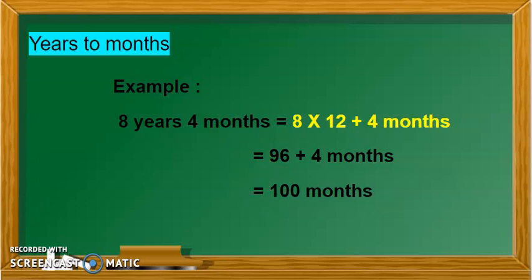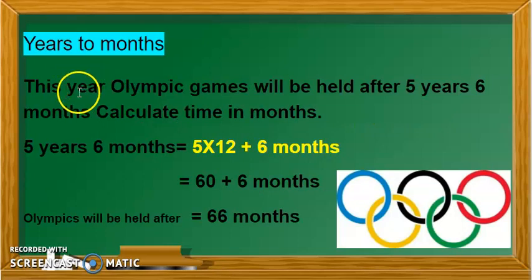Now, let us see an interesting story on this. This year, Olympic Games will be held after 5 years, 6 months. Calculate time in months. So, 5 years, we have to convert and 6 months, we will just add in it. 5 into 12 is 60 plus 6. So, Olympics Games will be held after 60 plus 6, that is 66 months.